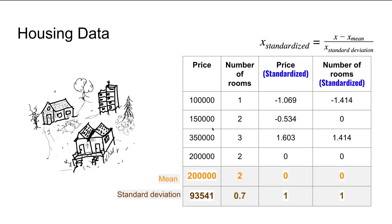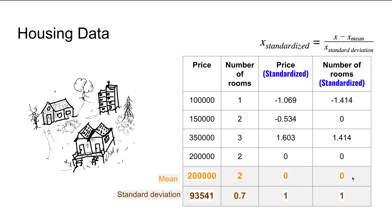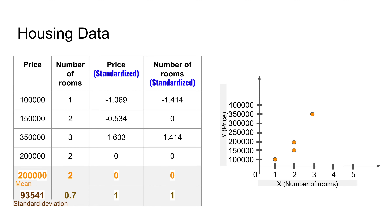After standardization, price and number of rooms are now in the same order of magnitude — around 1.6 and 1.414. What happens to the dataset after standardization is the mean becomes zero because you subtracted the mean, and the standard deviation or variance becomes equal to one.